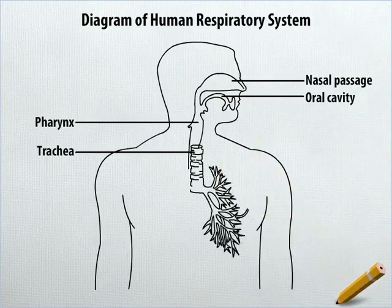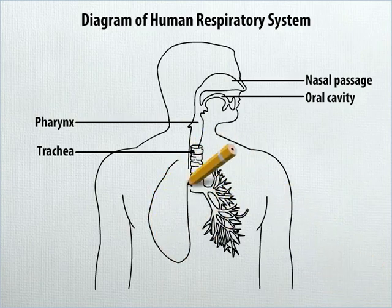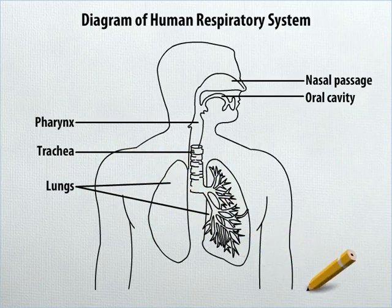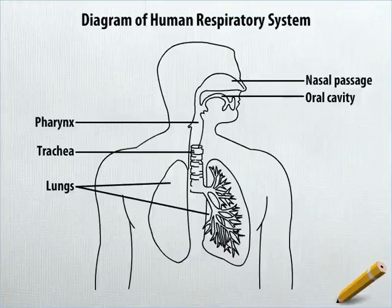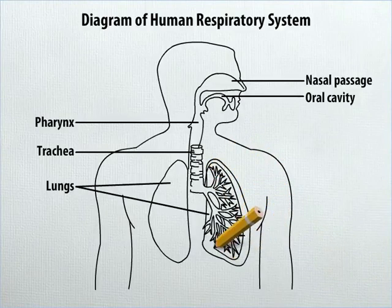On each side of the trachea, draw a slightly concave structure and label both as lungs. Inside the right lung, draw another similar structure, a little smaller.